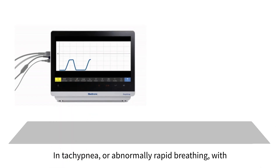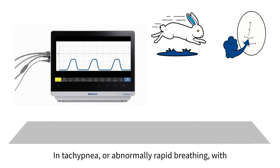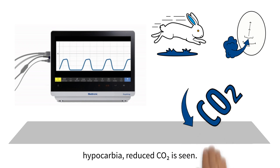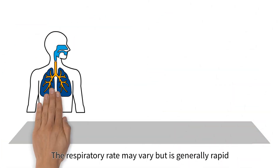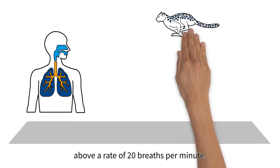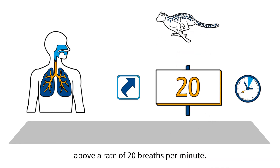In tachypnea, or abnormally rapid breathing, with hypocarbia, reduced CO2 is seen. The respiratory rate may vary, but is generally rapid, above a rate of 20 breaths per minute.